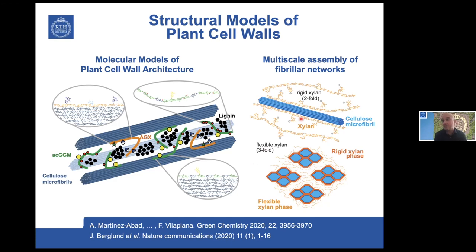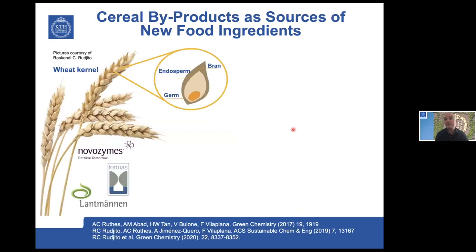We published that last year in collaboration with the University of Queensland in Australia. It has implications for food applications, because combining hemicellulose and cellulose, we could fine-tune different gel materials for dietary fiber applications. Now jumping to the main topic of today, I wanted to show you a project we've been driving for some years, trying to valorize byproducts from cereal production, and how X-ray scattering techniques have helped us understand the properties of the food products we are creating.